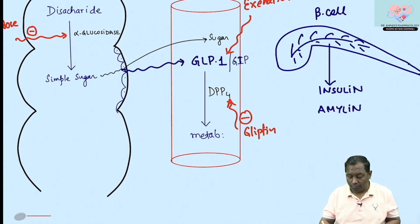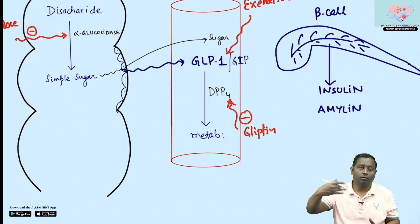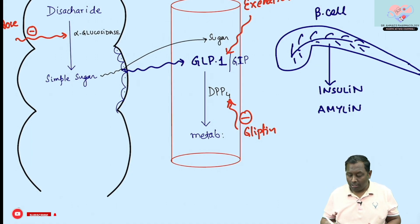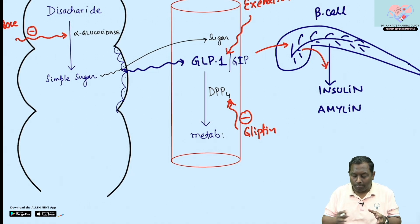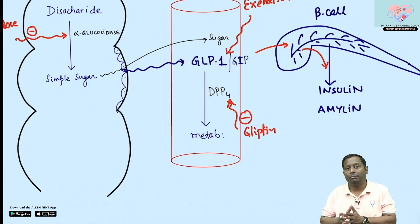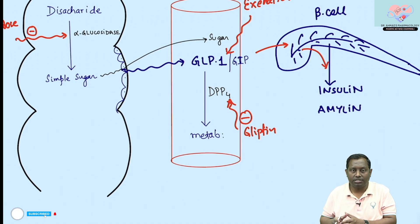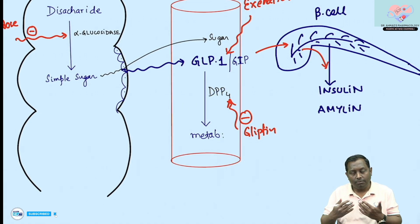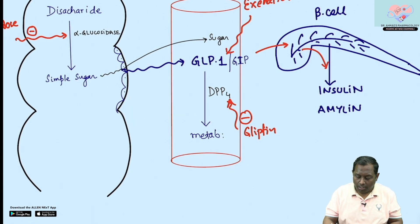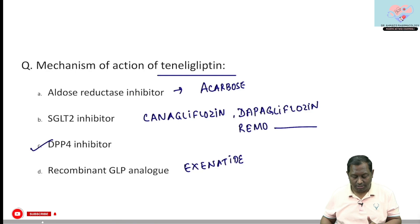Simple sugars absorbed from the gut work at the beta cell of the pancreas to promote insulin release. Simultaneously, intestinal epithelial cells release GLP (glucagon-like peptide), which also promotes insulin release from beta cells. However, GLP is a peptide and is short-acting — it is rapidly metabolized by DPP4 (dipeptidyl peptidase 4). By inhibiting DPP4, we allow longer duration of GLP and GIP activity, thereby prolonging insulin secretion.